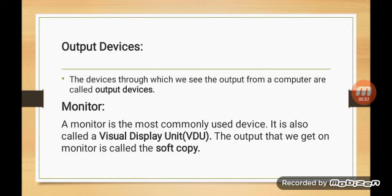Monitor. A monitor is the most commonly used output device. It is also called a visual display unit. It is similar to a TV screen and can display both text and pictures. The output that we get on monitor is called a soft copy.